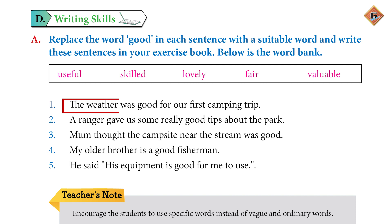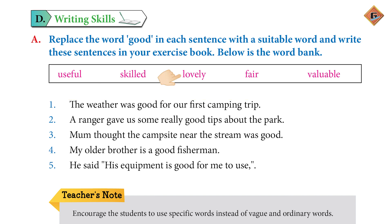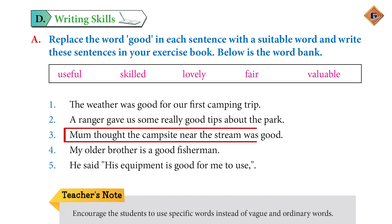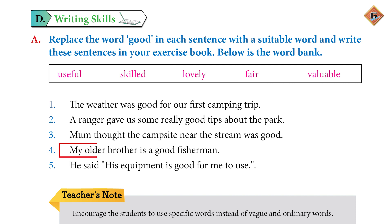The first one is: 'The weather was good for our first camping trip.' Answer: The weather was lovely for our first camping trip. Two: 'A ranger gave us some really good tips about the park.' Answer: A ranger gave us some really useful tips about the park. Three: 'Mum thought the campsite near the stream was good.' Answer: Mum thought the campsite near the stream was fair. Four: 'My older brother is a good fisherman.' Answer: My older brother is a skilled fisherman.